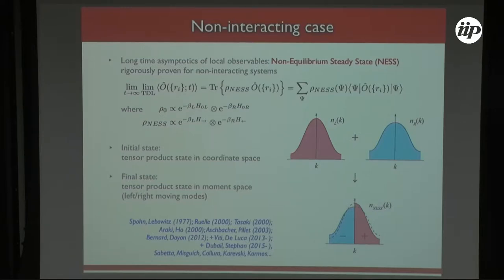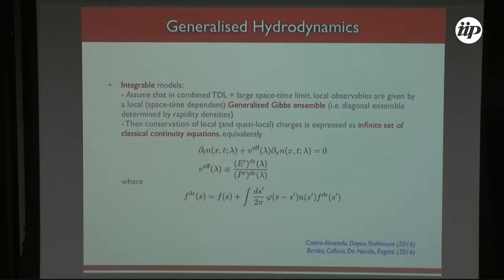The NESS has the interesting property that while the initial state is a tensor product in coordinate space, the final state is a tensor product in momentum space, with left- and right-moving modes carrying the temperature of the side from which they originate. Until very recently — until 2016 — there was no clear analytical prediction for the NESS in the interacting integrable case. In 2016, two groups of researchers, almost simultaneously, came up with what is now called the generalized hydrodynamic (GHD) theory.